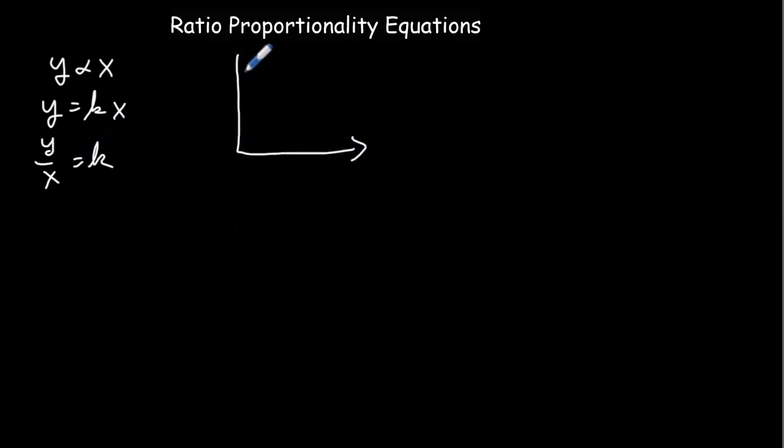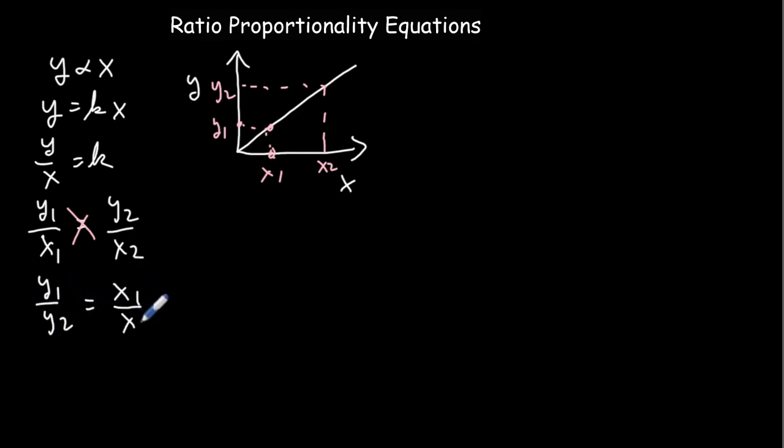And that is to say that y over x is always going to have the same value. And graphically, what that's going to look like is a straight line through the origin, such that I can take any two points on the line, x1, y1 for one point, and let's take x2, y2 as the other point. Then that ratio of y to x is going to be the same for every single point on the line. That is that y1 over x1 will be equal to y2 over x2. And then I can cross multiply and write that a different way. That is that y1 over y2 must be equal to x1 over x2.